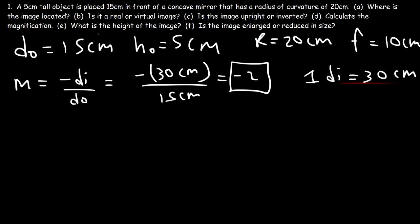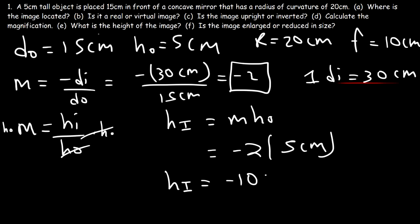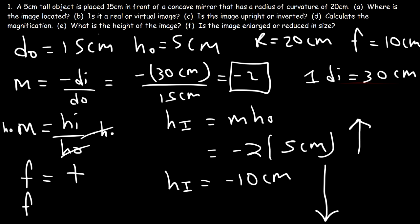Now let's calculate the height of the image. Magnification also equals hI divided by hO, so the image height equals magnification times the height of the object. The magnification is negative 2 and the object height is positive 5, so the image height is negative 10 centimeters. The positive object height means it points in the positive y direction; the negative image height means it points downward — that's why it's inverted. By the way, for a concave mirror the focal length is positive, and for a convex mirror it's negative.